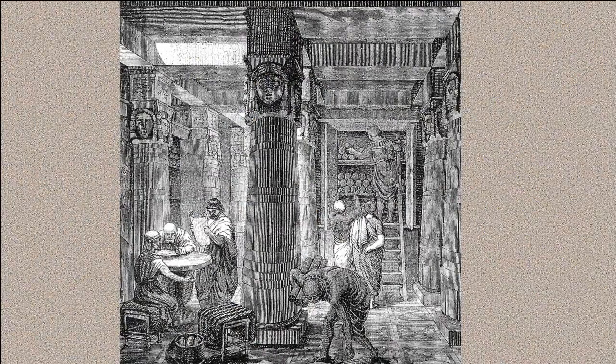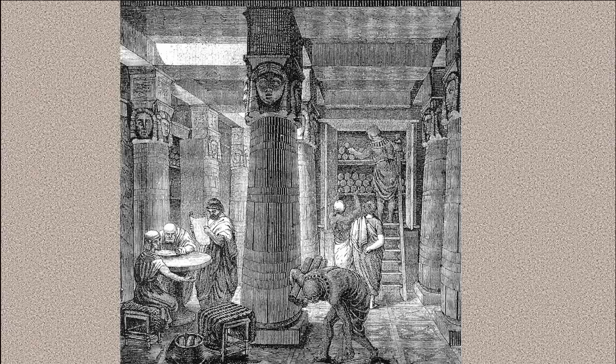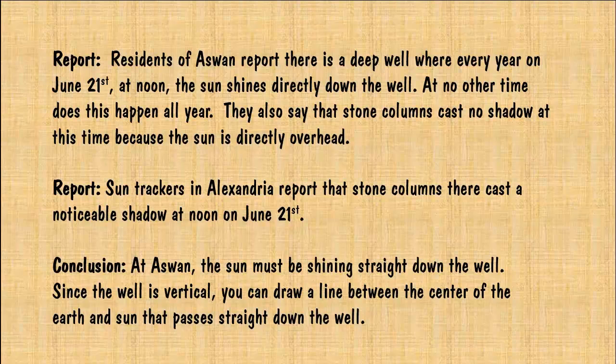As chief librarian, Eratosthenes would have had access to the historical archives of Egypt from ancient times. Legend has it that he noticed one report from the residents of Aswan which stated that there was a deep well there with an interesting history. Every year on June 21st, the longest day of the year, at high noon exactly, the overhead sun shines directly down the well, casting no shadow. At no other time of the year did this happen.